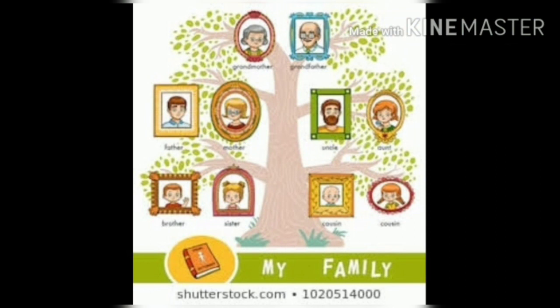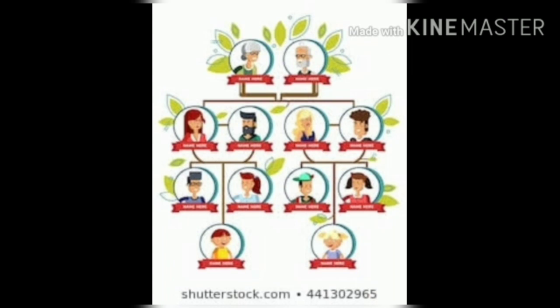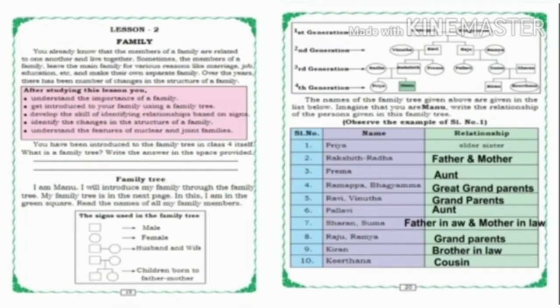According to the boy Manu, he is using his family tree and the names given in the list below the image. Manu writes the relationships we can observe. We can write: first generation — Ramappa and Bagyamma; second generation — Vinuta and Bagyamma; third generation — Ravi, Raju, Ramya.